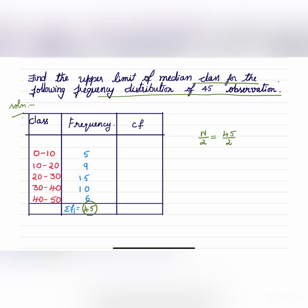CF is here, first 5, then 5 plus 9 is 14, 14 plus 15 is 29, 29 plus 10 is 39, 39 plus 6 is 45. So we got 45 here.